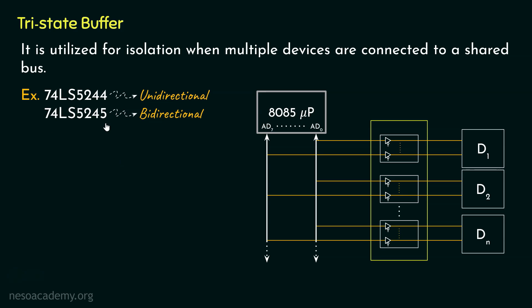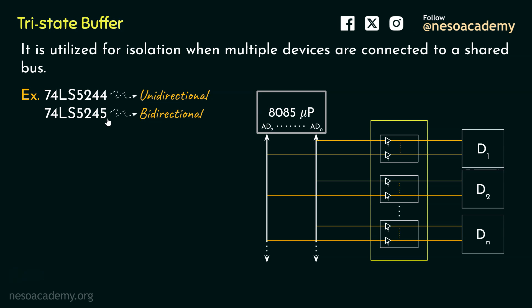Unidirectional tri-state buffers can transmit signals in one direction only — from input to output. They are like one-way streets where data flows from the source to the destination without the ability to send back. This is useful for situations where data only needs to move in a single direction, such as from the keyboard to the CPU. On the other hand, bidirectional tri-state buffers can transmit signals in both directions, acting as a two-way street — they can both send and receive data. This makes them ideal for communication where traffic handling is needed in both directions, such as communication between the CPU and memory.